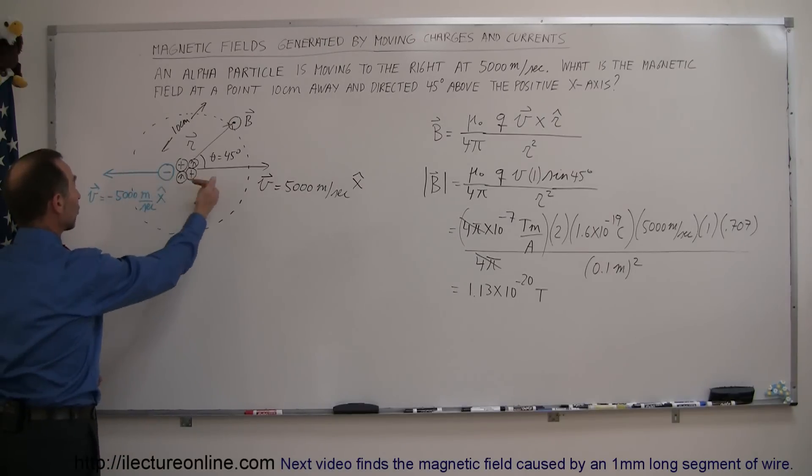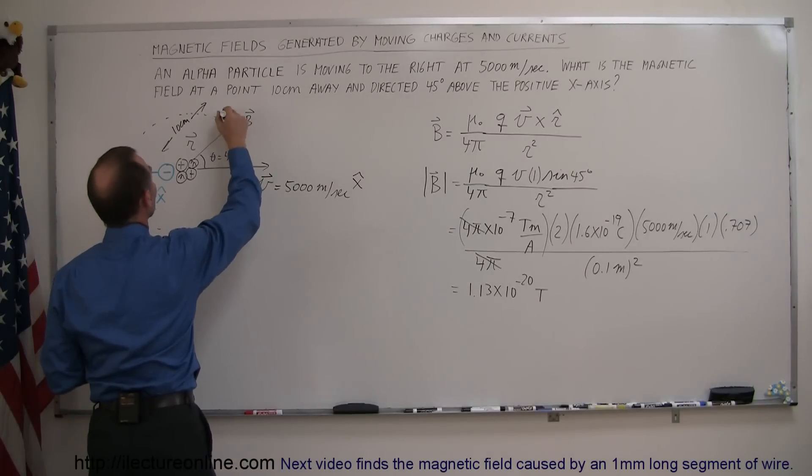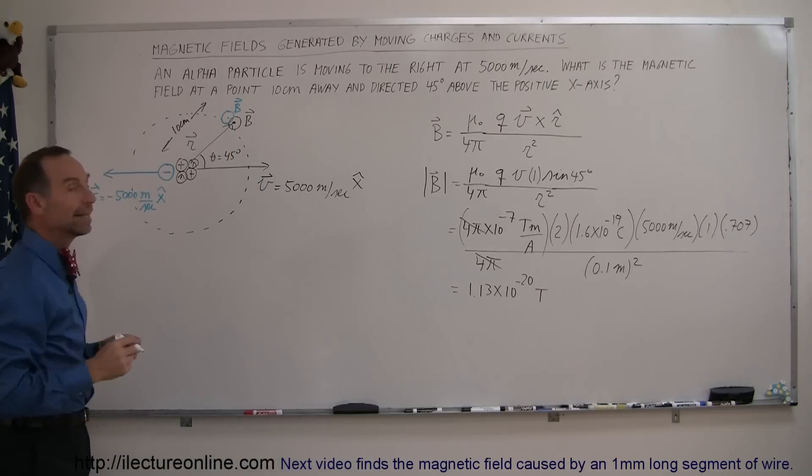So even though the electrons move in the opposite direction, since it's negative that kind of negates that, and you still have an additional amount of B field coming out of the board caused by the electron.